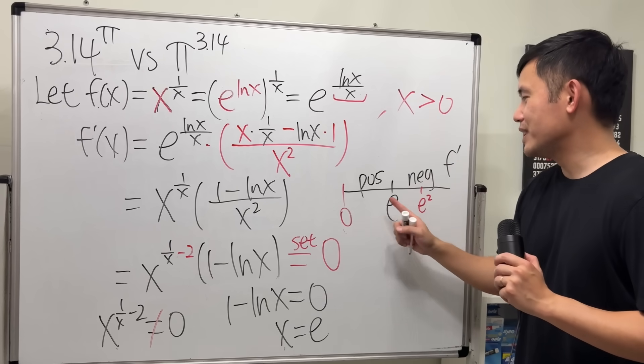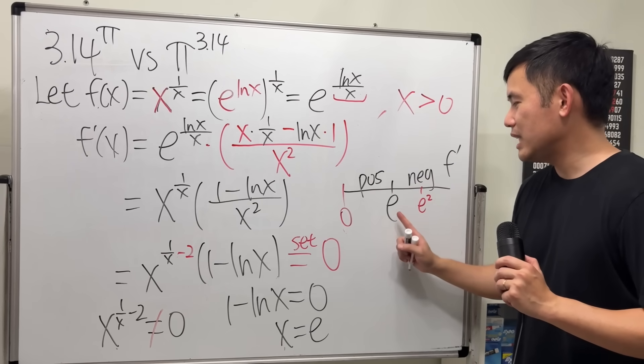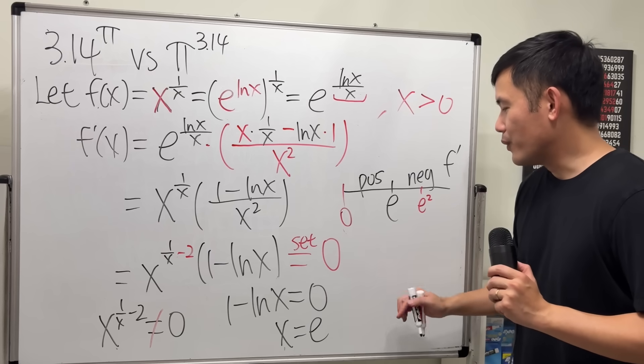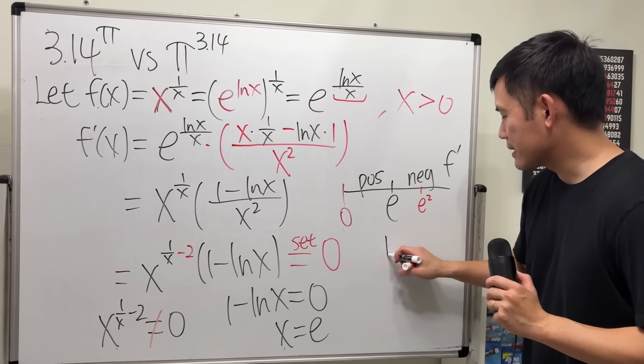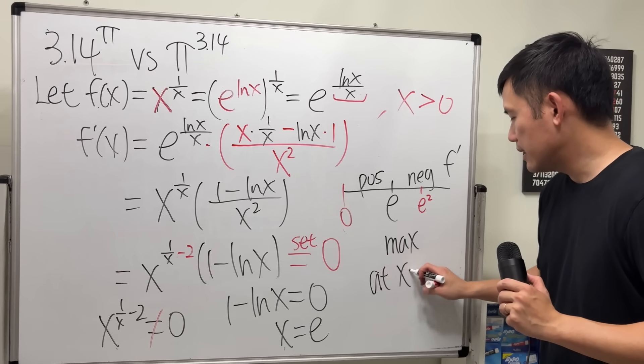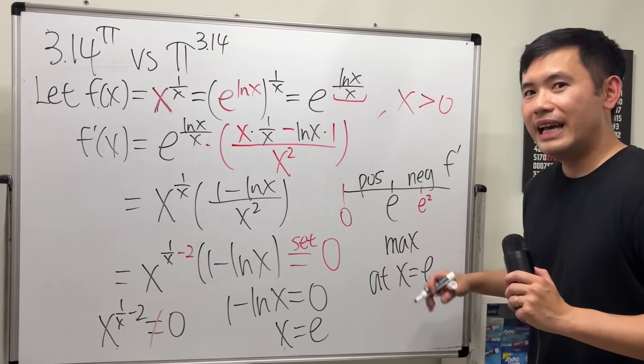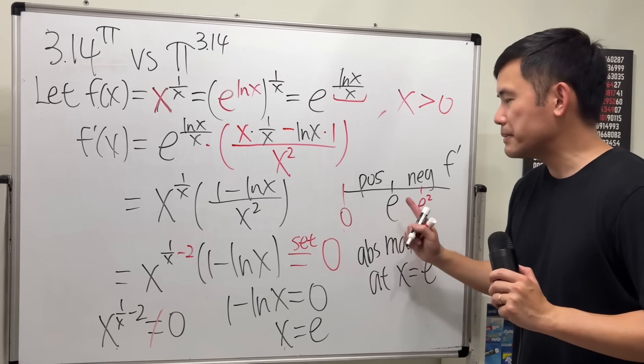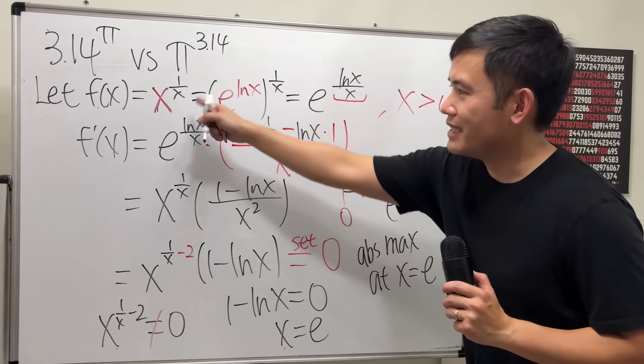So, as you can see, the first derivative goes from positive to negative at e. Therefore, we can say we have a max at x equals e. And in fact, this is also going to give you the absolute maximum for this function.